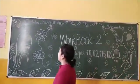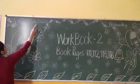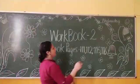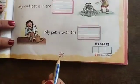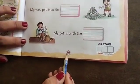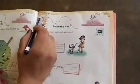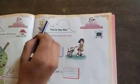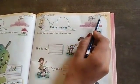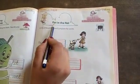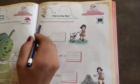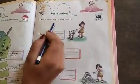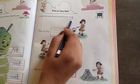Today's date is 14th October 2020 and day is Wednesday. Now we are going to do book page 111. Topic is 'Pet in the Net.' Look at the pictures and complete the words.